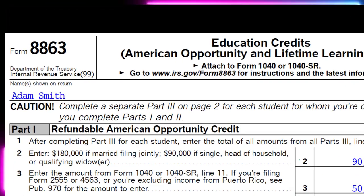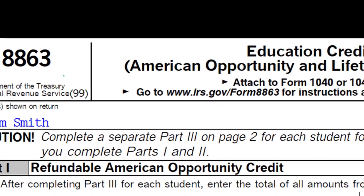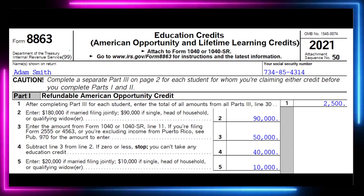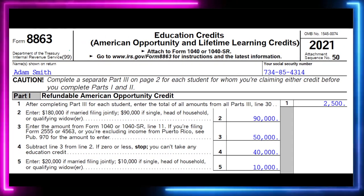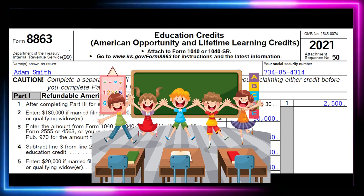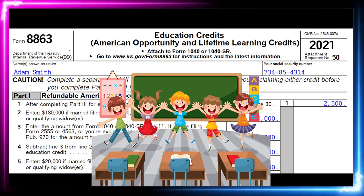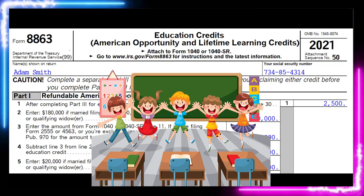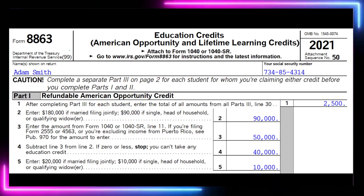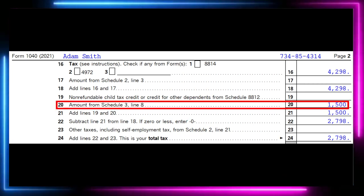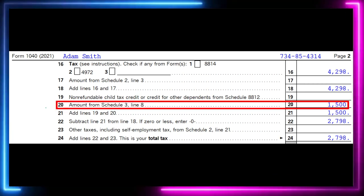This is Form 8863, covering the educational credits: the American Opportunity Credit and the Lifetime Learning Credit. We typically look for the American Opportunity Credit first, because you get more of a benefit from it. If you can't get the American Opportunity Credit due to its more stringent requirements, then you'd go for the Lifetime Learning Credit.